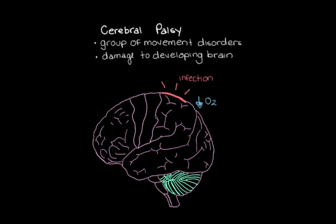This damage occurs in parts of the brain that control our movements. And this damage is permanent, but it's not progressive — so the initial damage to the brain doesn't worsen over time. But the problems with movement do persist for the affected person's entire life.